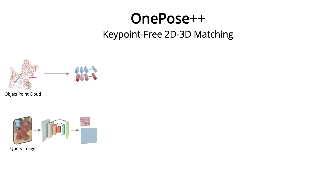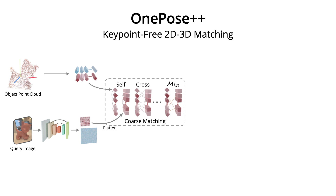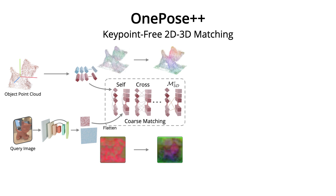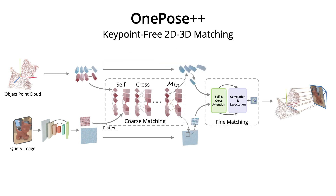Our module first extracts multi-scale query image features. Then, instead of detecting keypoints on the query image, we flatten the coarse feature map and apply interleaved self and cross attention layers N times to obtain transformed 2D and 3D features. Coarse 2D-3D correspondences are obtained by mutual nearest neighbor searching. The visualization of features before and after the transformer layers shows that the transformed features become more discriminative for establishing correspondences. Next, we crop the local feature patch on the fine feature map around each coarse 2D match. The fine matching module transforms the 3D feature and cropped 2D features, and calculates each fine 2D match location with feature correlation and expectation.